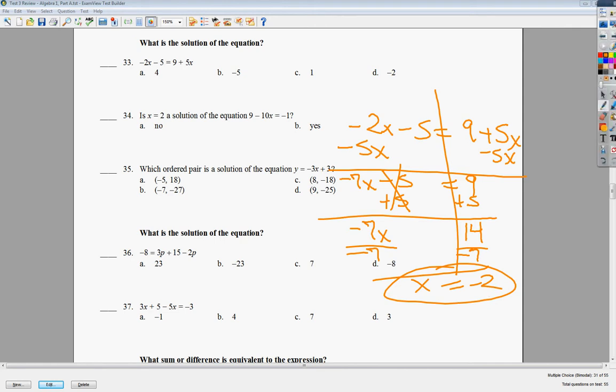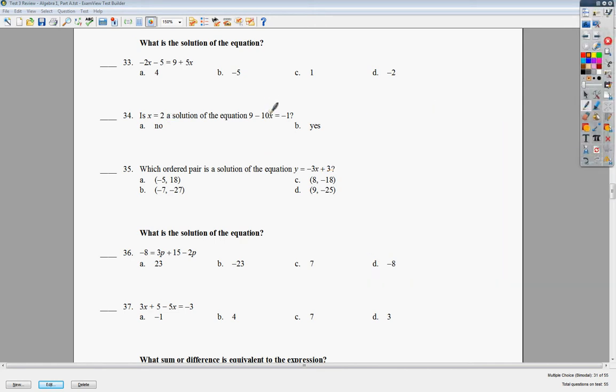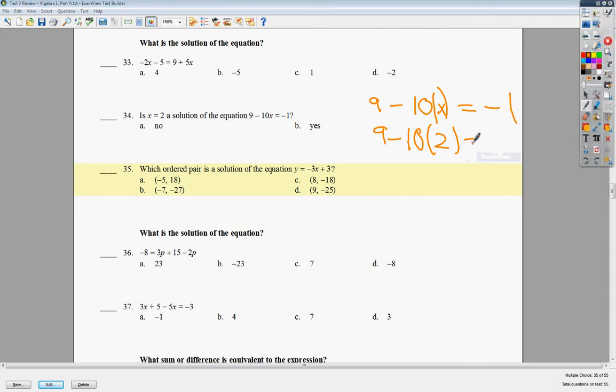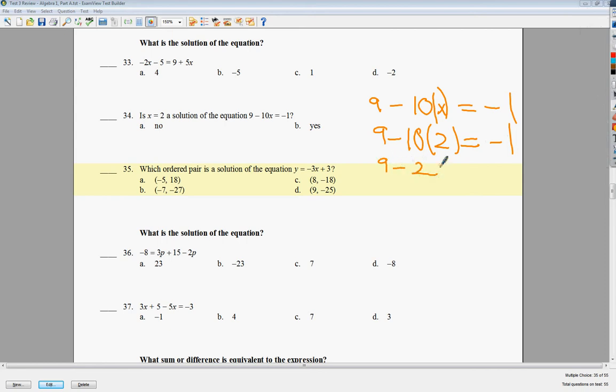Number 34. Is it a solution? So all I'm going to do is plug in my x value here for x right here. So instead of having 9 minus 10x, I'm going to plug in. Wherever the x is, I'm going to put parentheses around it. 9 minus 10 times 2. 10 times 2 is, of course, 20. So I get 9 minus 20, or negative. 10 times 2 is negative 20, I should say. So now all I have to do is see what 9 minus 20 is. And if it happens to be negative 1, then I put yes. But if I do 9 minus 20, I get negative 11. Well, they're not the same. So I can say with pretty good confidence that 34 is no.